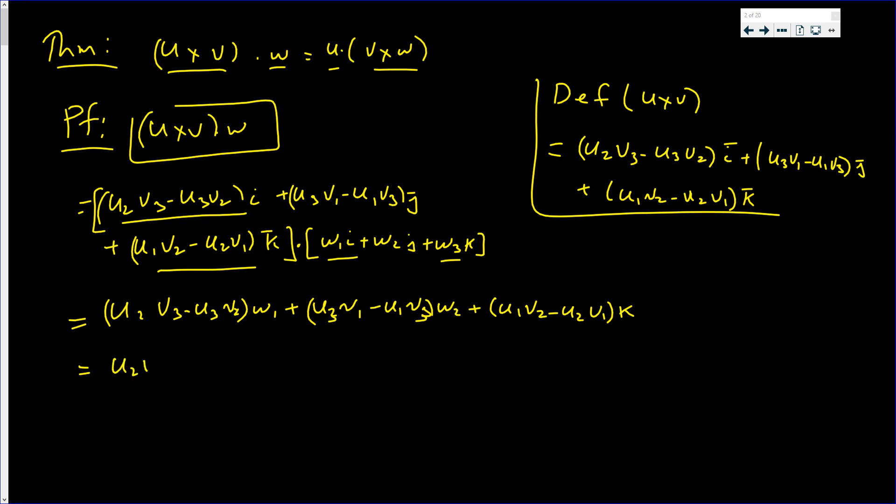Let's distribute: u2 v3 w1 minus u3 v2 w1, plus u3 v1 w2 minus u1 v3 w2, plus u1 v2 w3 minus u2 v1 w3. Let's see if we have anything that's the same.